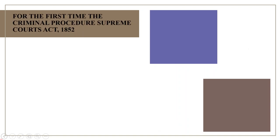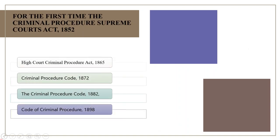Later, this act was replaced by the High Court Criminal Procedure Act 1865. The Criminal Procedure Code 1861 codified the acts of procedure applying to the provinces, and it was replaced by another Criminal Procedure Code in 1872. The Criminal Procedure Code 1882 was enacted with uniform criminal procedure for the whole of India, presidency towns as well as the provinces. It was supplanted by the Code of Criminal Procedure 1898, which was amended by many amendments acts and remained in force for about three quarters of a century.